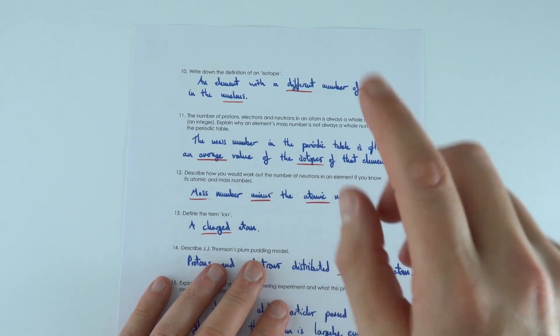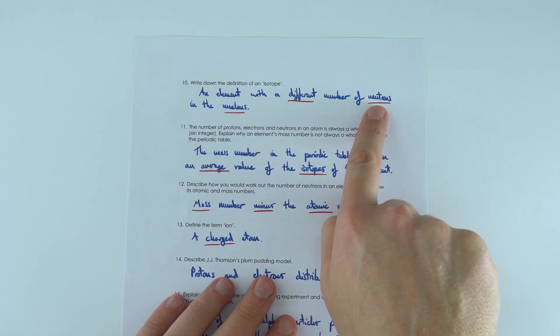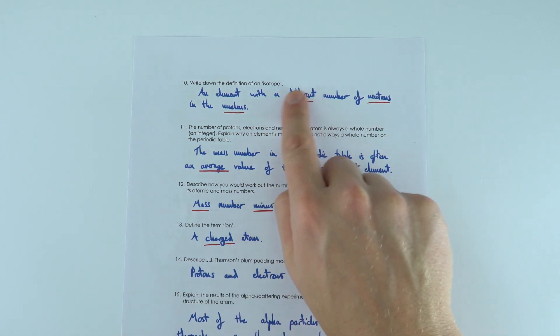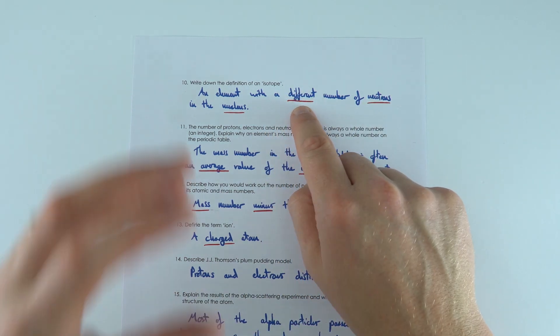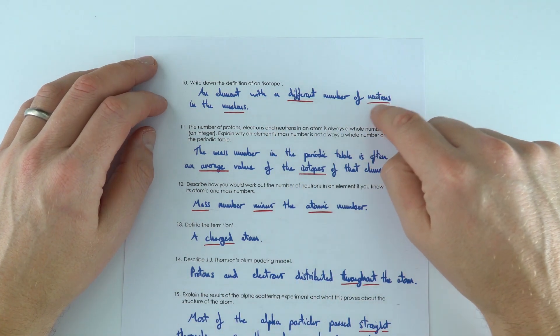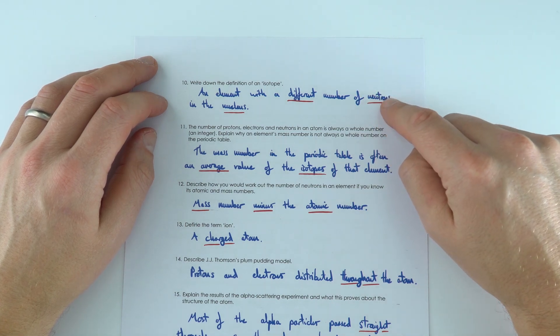There are two definitions you need to know about, so don't get them confused. Isotopes have a different number of neutrons in the nucleus, so it might be the same type of chemical element, it behaves chemically in the same way, but it has a different mass number because of a different number of neutrons in the nucleus.